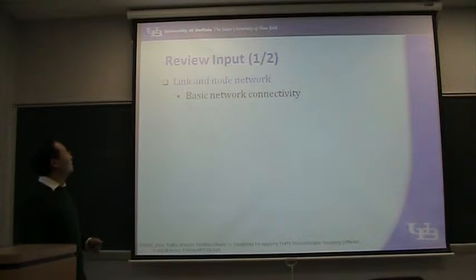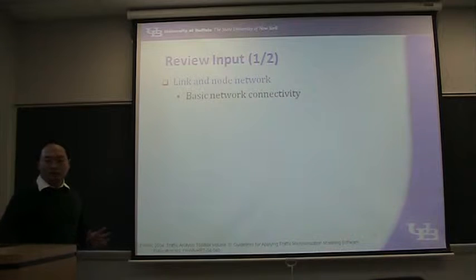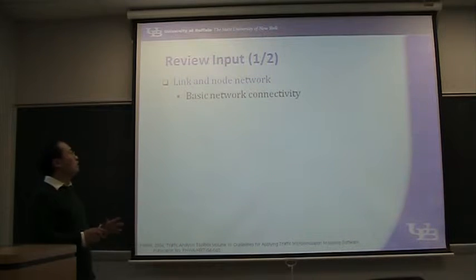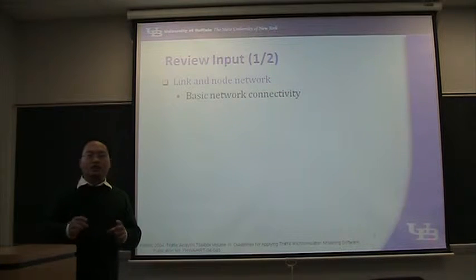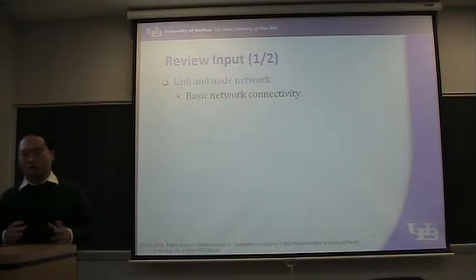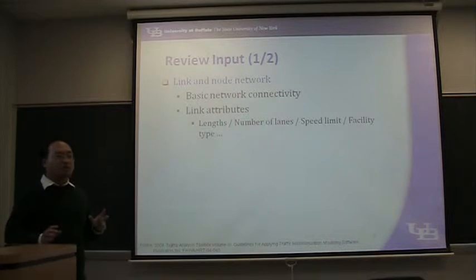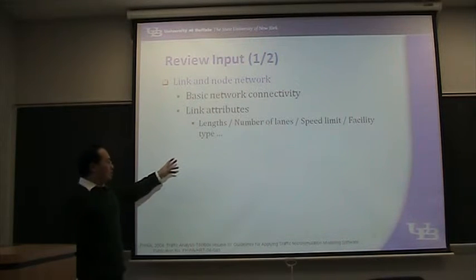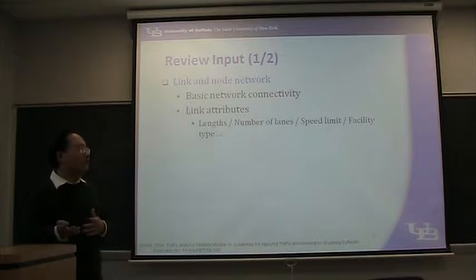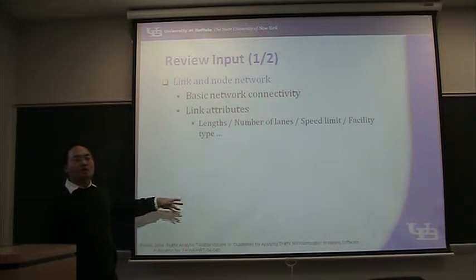Let's go back to error checking. After reviewing software errors, you have to review your inputs, which can be divided into three steps. The first step is to review the link and node network. You want to check your network connectivity — check every intersection, every ramp, and every link is connected, so no place on your network is isolated unless intended. I'm introducing this in a systematic, sequential way so you can follow this procedure when reviewing your own model.